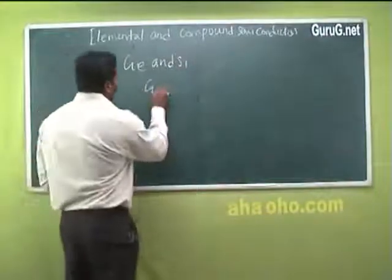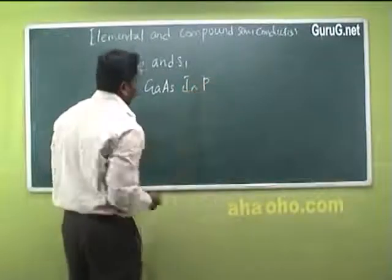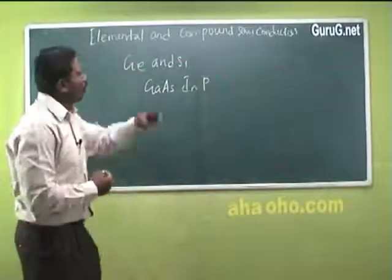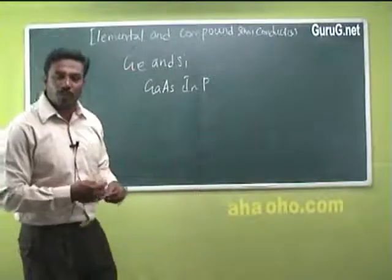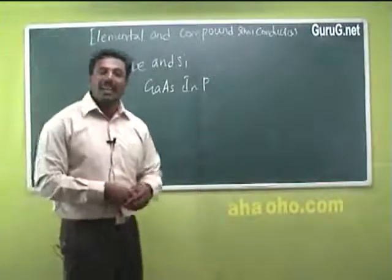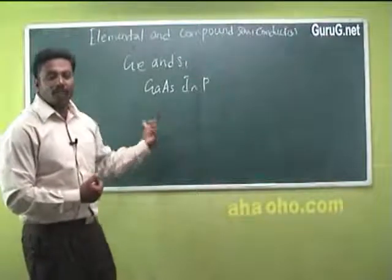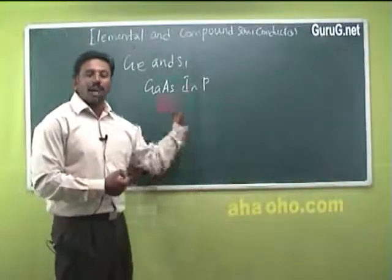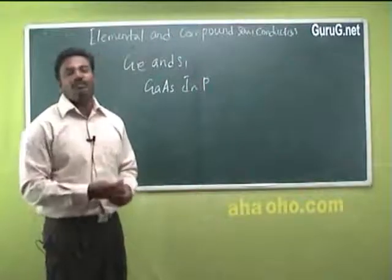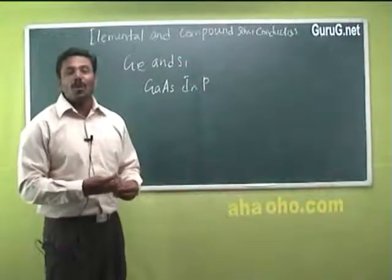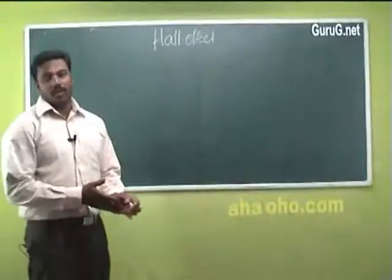Good examples are gallium arsenide and indium phosphide. These are very good examples of compound semiconductors. Compound semiconductors are otherwise called direct band gap semiconductors. In direct band gap semiconductors, the recombination of electrons in the valence band and holes in the conduction band takes place directly, and photons are emitted in the visible and infrared region.